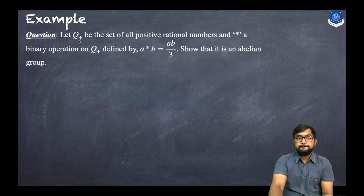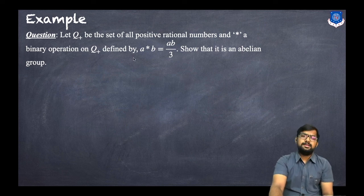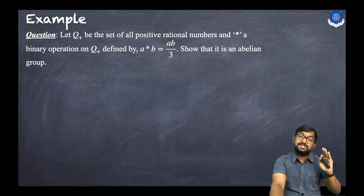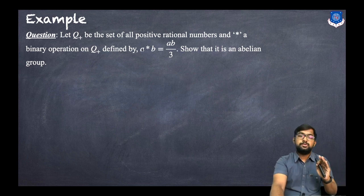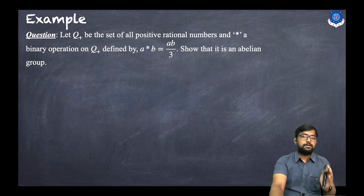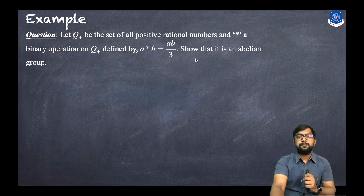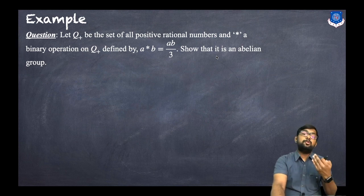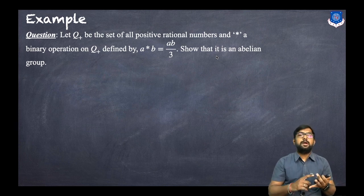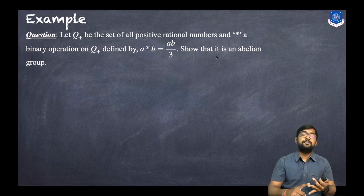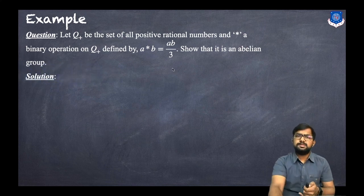Let's look at an example. Let Q+ be the set of all positive rational numbers, and let star be a binary operation defined by a star b = ab/3. Note that the star operation here is not ordinary multiplication — it is the product of two elements divided by three. We need to show that (Q+, star) is an abelian group, so we must verify: closure, associativity, identity, inverse, and commutativity.